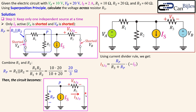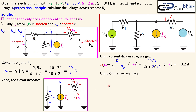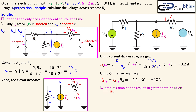Using the current divider rule: I3(Is) = (Rp / (R3 + Rp)) × (−Is). Substituting: Rp = 20/3, R3 = 60, Is = 2 amps, so I3 = (20/3) / (60 + 20/3) × (−2), giving exactly −0.2 amps. The current flows from right to left at +0.2 amps. Applying Ohm's law: V3(Is) = −0.2 × 60 = −12 volts.